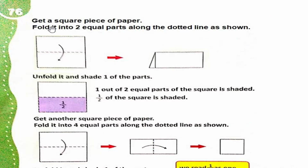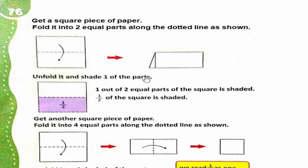Page 76. Get a square piece of paper. Fold it into two equal parts along the dotted line as shown. Ek square piece of paper lein aur usko beech mein se is tarah fold kar lein. Unfold it and shade one of the parts. Ab us paper ko unfold karein aur one part ko shade karein. One out of two equal parts of the square is shaded — one by two of the square is shaded.